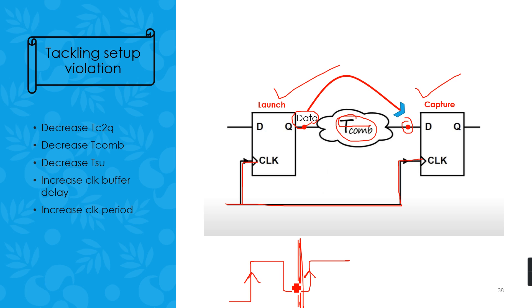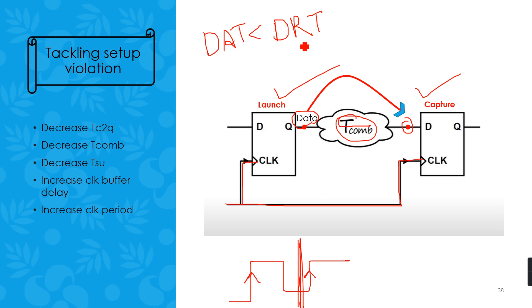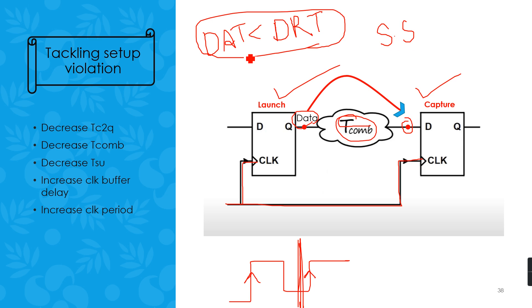Keeping this principle in hand, we derived a condition that the data arrival time (DAT) should be less than data required time (DRT). We also defined a term called setup slack, which is the difference DRT minus DAT. If we fabricate a device having a setup violation, we can still use it by adjusting the parameters of the equation.